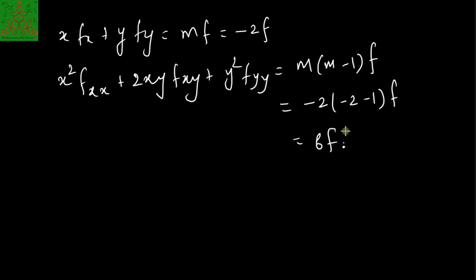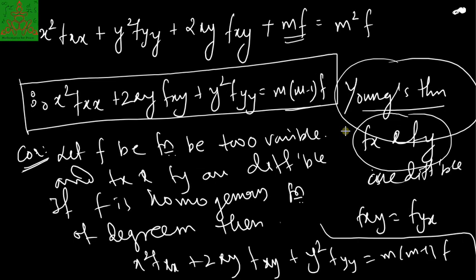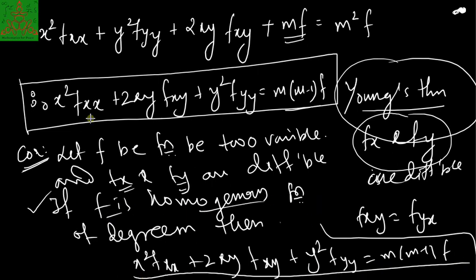In this video we discussed one key result: the corollary of Euler's theorem, which tells you that if fx and fy are differentiable and f is a homogeneous function, you can write x²·fxx + 2xy·fxy + y²·fyy = m·(m−1)·f. That's it for this video. If you liked it, please press the like button. For any comments, suggestions, or questions, drop them in the comment box below. See you in the next video — bye bye!